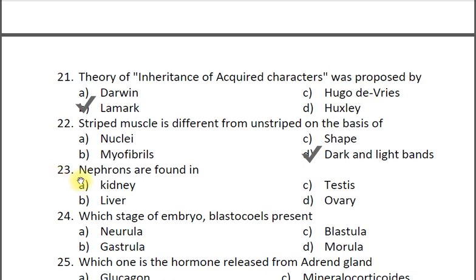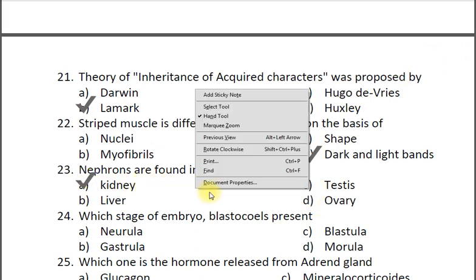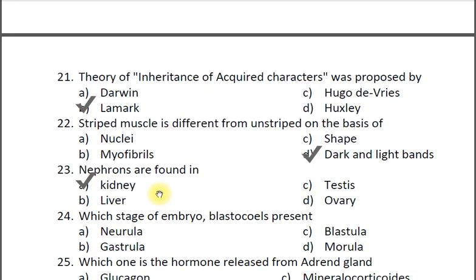Question twenty-three: Nephrons are found in — A kidney, B liver, C testes, D ovary. The correct answer is A kidney. The nephron is the basic unit for filtration.